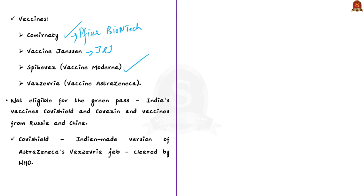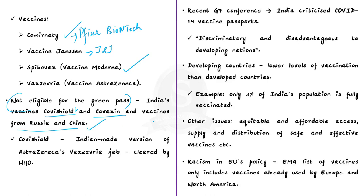Those vaccinated with India's Covishield or Covaxin are not eligible for the EU Digital COVID Certificate and therefore cannot get the Green Pass or travel to EU countries. Vaccines from Russia and China are also not eligible. Worryingly, Covishield is cleared by the World Health Organization, yet it is still not recognized by the EU. That is why this policy is considered clearly discriminatory. At the G7 summit this year, India was invited as a guest and called the COVID-19 vaccine passport practice discriminatory and disadvantageous to developing nations.